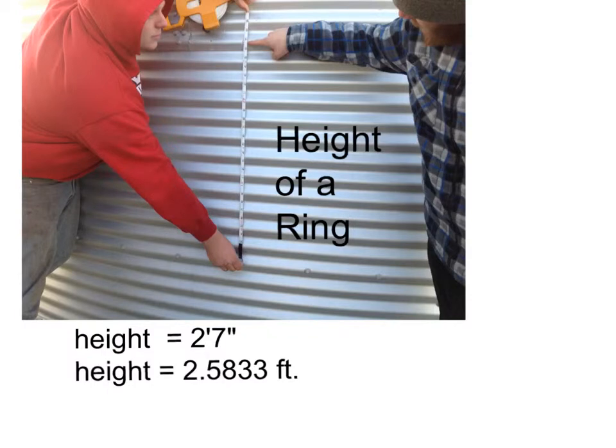And remember then, to convert that into feet, we would take the 7, divide that by the 12 inches in a foot, and get the height of a ring to be 2.5833 feet.